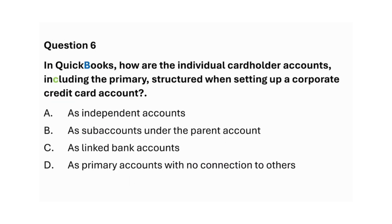How are the individual cardholder accounts, including the primary, structured when setting up a corporate credit card account? A. As independent accounts. B. As subaccounts under the parent account. C. As linked bank accounts. D. As primary accounts with no connection to others. Answer: Option B — As subaccounts under the parent account.